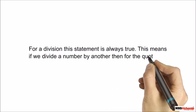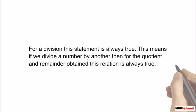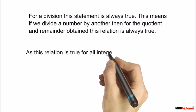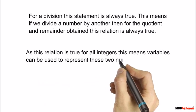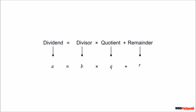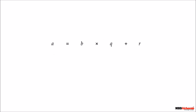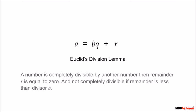This means if we divide a number by another, then for the quotient and remainder obtained, this relation is always true. As this relation is true for all integers, variables can be used to represent these numbers. If we write a in place of dividend, b in place of divisor, q in place of quotient, and r in place of remainder, we get a = bq + r. This generalized statement is called Euclid's division lemma.